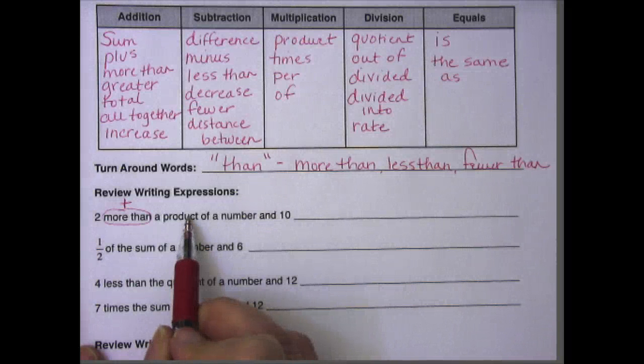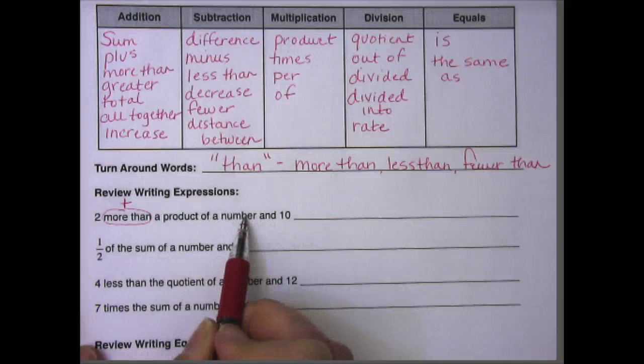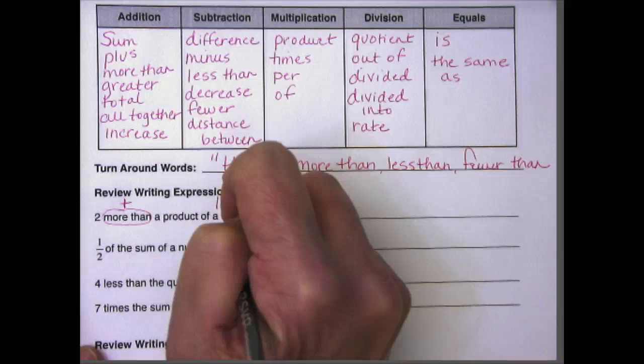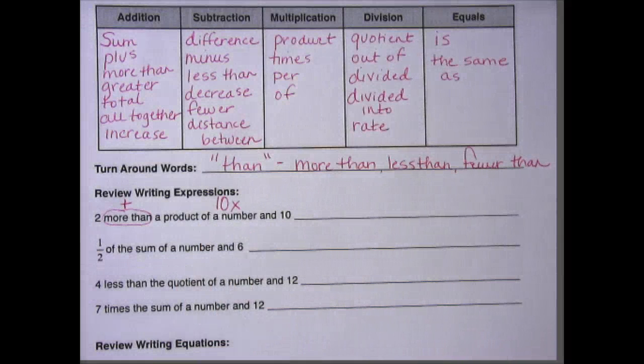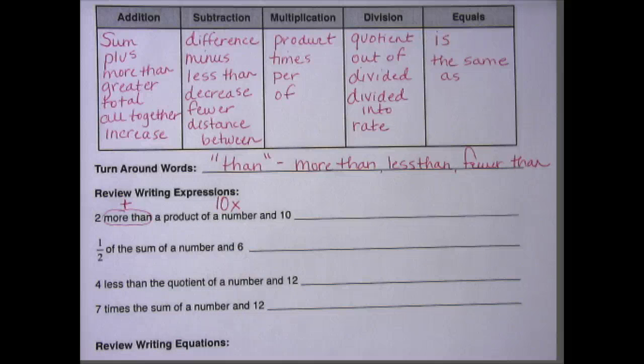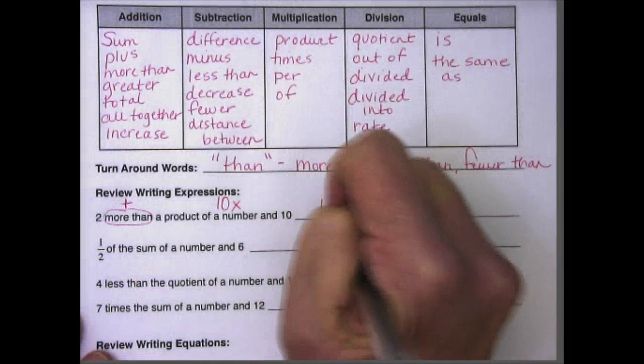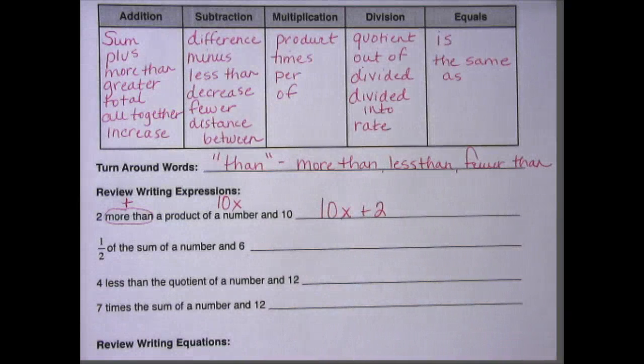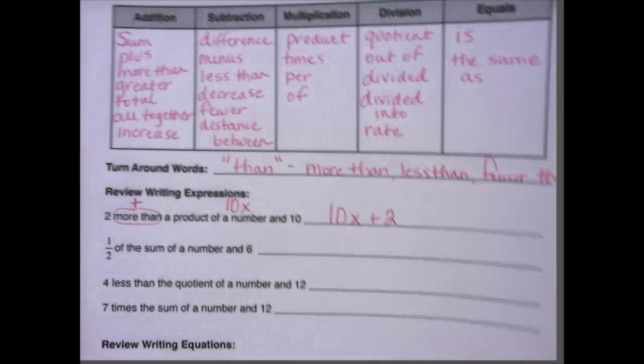Okay, so the product of a number and ten means that we're going to take a number. We don't know what it is, so it's going to be x, and we're going to multiply it by ten. And the general way we write it is 10x. We wouldn't put the x first. We would put the ten before the x. So remember the turnaround words. We're going to write 10x + 2.